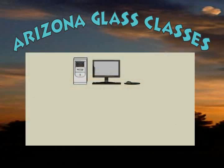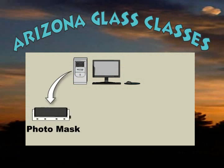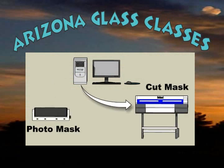There are two basic options for creating a sand carving mask. The first method is creating a photo mask. The second is with a cut mask utilizing a vinyl cutter and masking material. The masking material can range from 3mm sign vinyl all the way up to 25-35mm rubber masking for heavy duty sand carving to produce deep cuts.